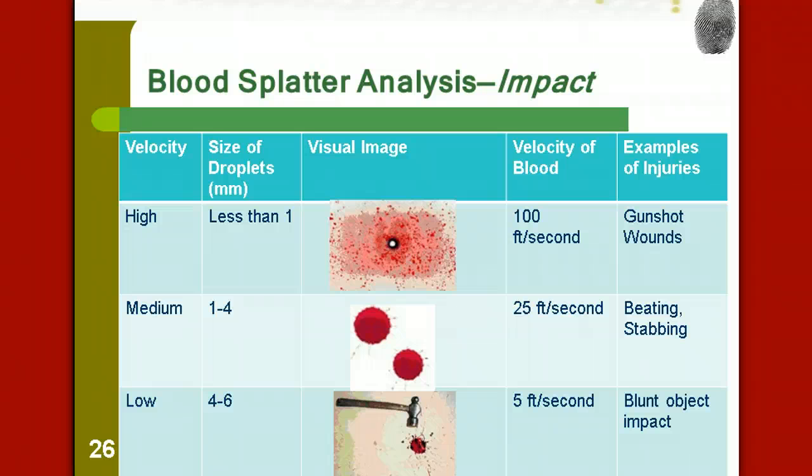And then there's the low velocity, which we see much larger droplets, four to six millimeters in diameter. The blood travels much slower. That's going to be something that we call blunt object impact. If somebody was hit with a hammer or a bat or something like that, the blood travels much slower at five feet per second.